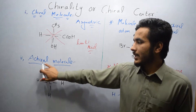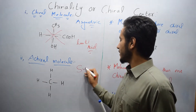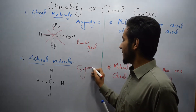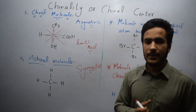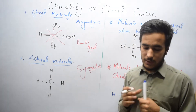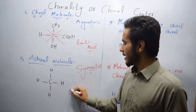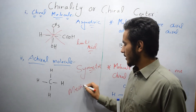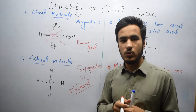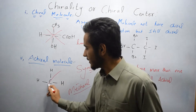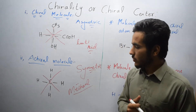The second type is the achiral molecule, also known as a symmetric molecule — it is the opposite of a chiral molecule. It can be divided into two equal parts. For example, methane can easily be divided into two equal parts in any proportion.